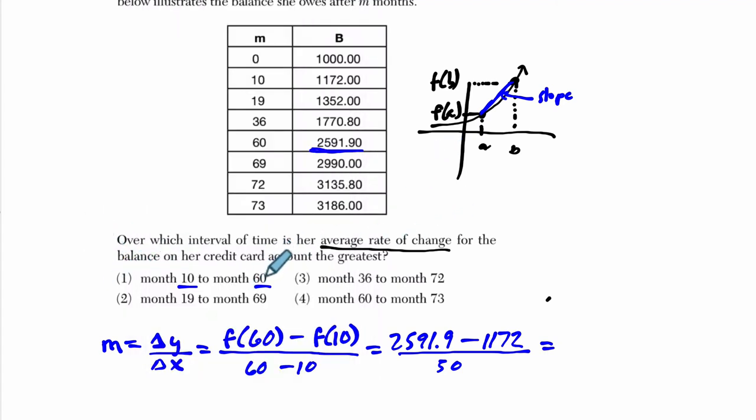Otherwise, if you just divide the second number by 50, it will, of course, get you a different answer. That's 28.39. Okay, so I'm going to write that over here. For choice one, it is 28.398. Now, we could go through each choice, but we might also start to estimate. So, for example, 19 to 69. Okay, there we're going. Let me clear off some of my old notes here. From 19 through 69 here, we're going up from 1,300 to 2,900. That's a difference of 1,600 over 50, right?